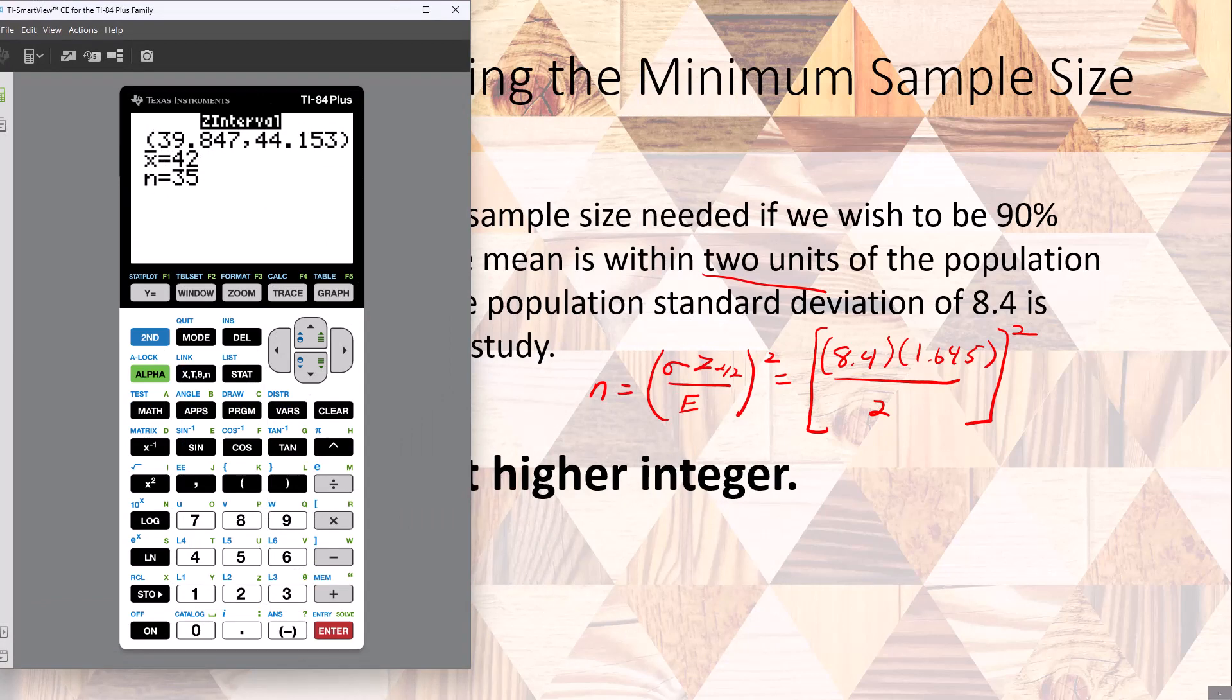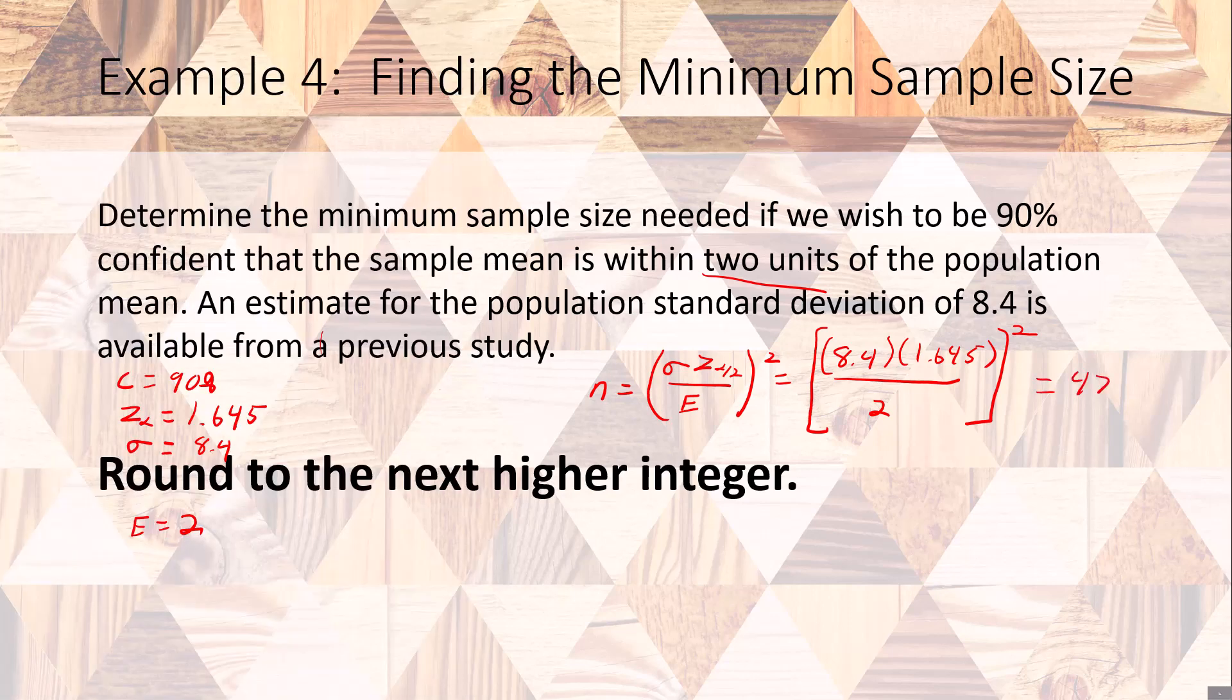It's going to be 8.4 times 1.645 divided by 2. We have that number, now we got to square it, and that gives me 47.73. I need to round that up to 48. Next higher integer, that means the minimum sample size has to be 48, and that would be the answer to that particular question.